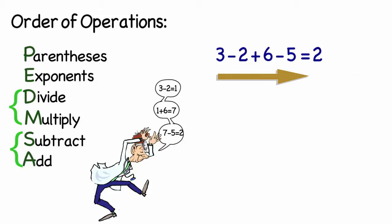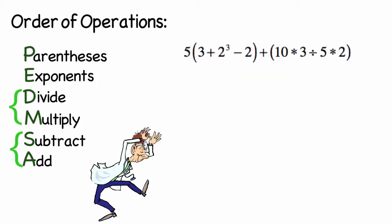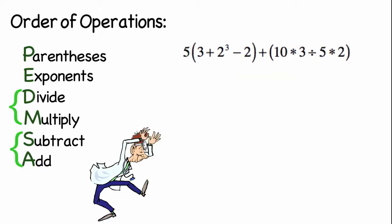Now, let's look at more complex problems, where we can apply all our rules. 5 times the quantity 3 plus 2 to the third minus 2 plus the quantity 10 times 3 divided by 5 times 2. The order of operation rules say that we should do what's inside the parentheses first. So let's look at the first grouping.